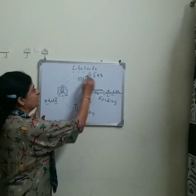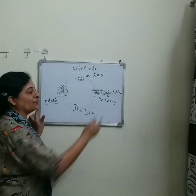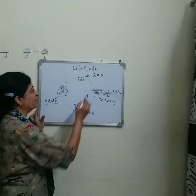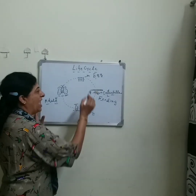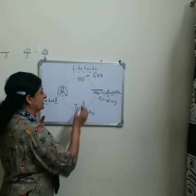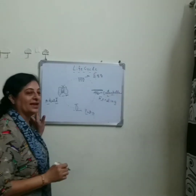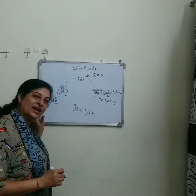So how many stages are there in the life cycle of a butterfly? There are four: egg, caterpillar, pupa, and adult butterfly.